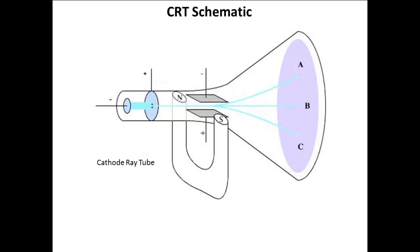In 1897, Joseph John, J.J. Thompson, performed some experiments with a cathode ray tube.